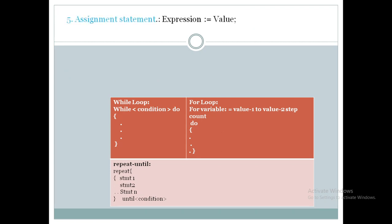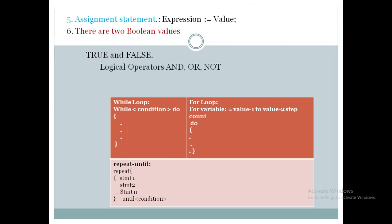The fifth convention is assignment statements: simply write 'expression = value'. For example, to assign 10 to A, write 'a = 10'. The sixth convention covers Boolean values — true and false (capitalized) — and operators: logical operators are AND, OR, and NOT; relational operators include less than or equal to, greater than, greater than or equal to, double equal to, and not equal to — the same as in C programming.